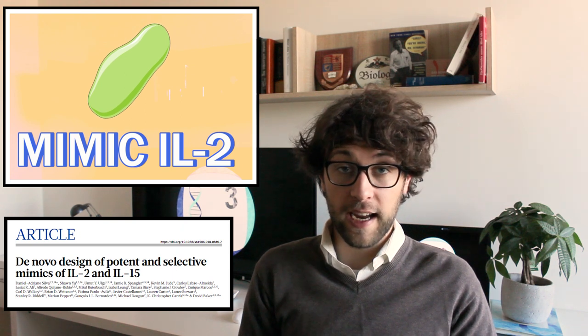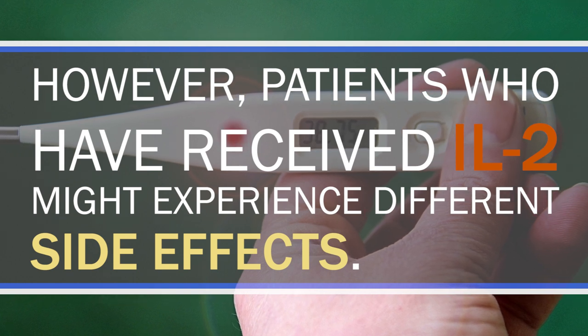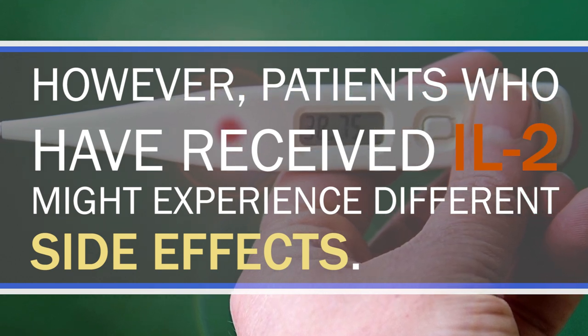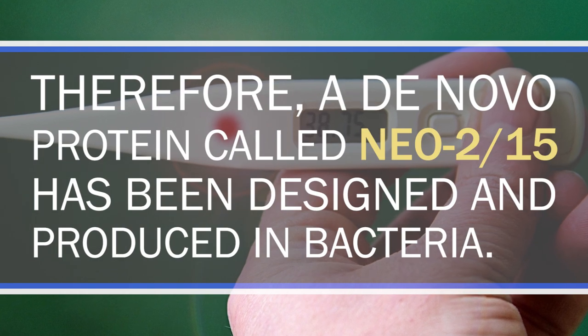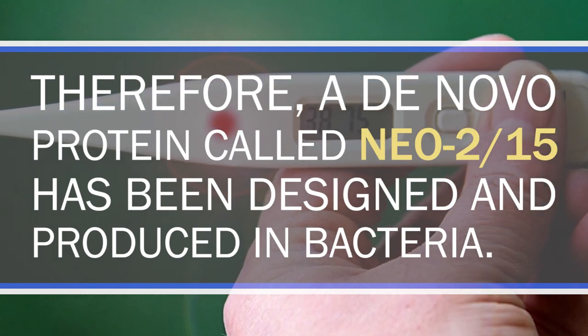In cancer therapy proteins also have been designed to mimic the structure of IL-2. IL-2 is a molecule which is normally produced by some cells of our body and it stimulates the immune system. By the administration of IL-2 our immune system can be supported to kill cancer cells. However patients which have received IL-2 might experience several side effects such as fever, nausea, diarrhea or liver problems. Therefore a de novo protein called Neo-2/15 has been designed and produced in bacteria. Compared to IL-2 the synthetic protein caused more local responses which might mean that it causes less side effects.